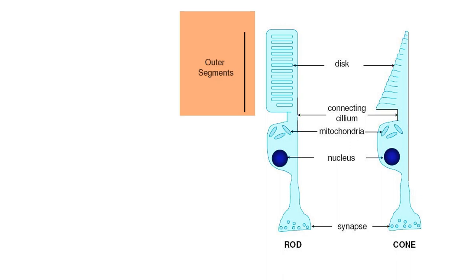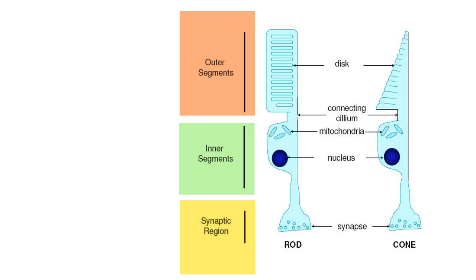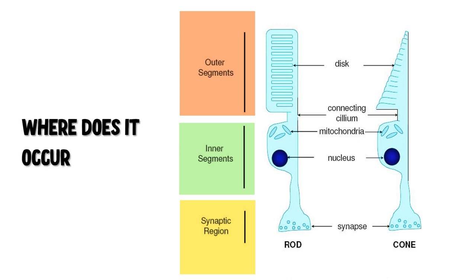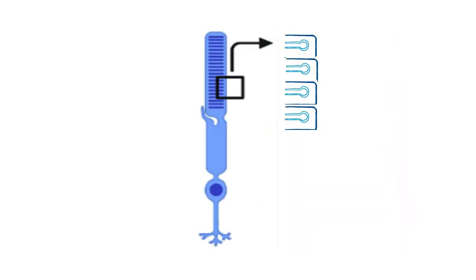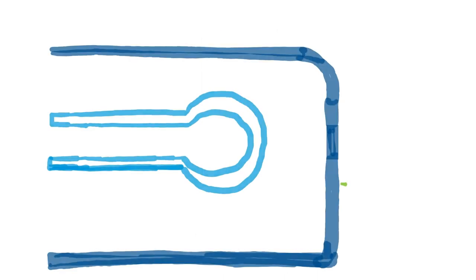The rods and cones have an outer segment, inner segment, and a synaptic region. Phototransduction occurs in the discs present in the outer segment of the rods and cones. The outer segment of the rod has several discs stacked on each other.